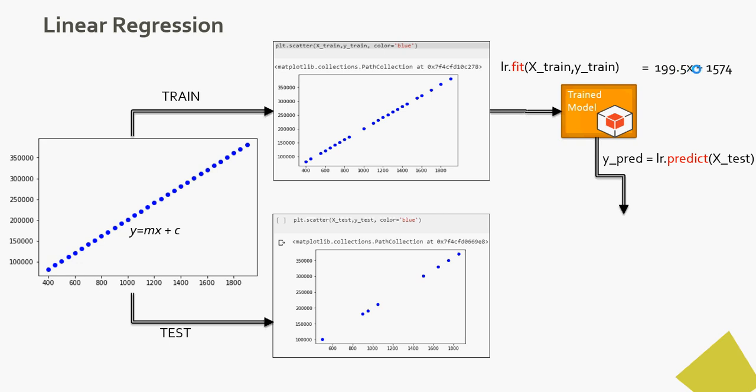So for example, let's say this value, which is around 900 or something. So 199.5 multiplied by 900 plus 1574 would be the value y_predicted. And then I have the y_test. I have the y_predicted. Let's compare it.